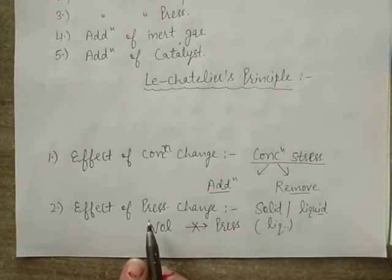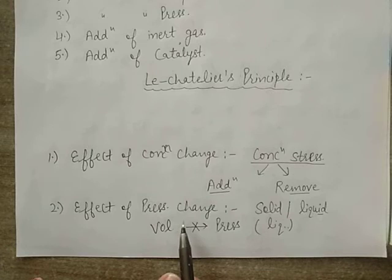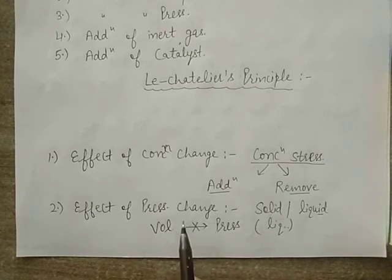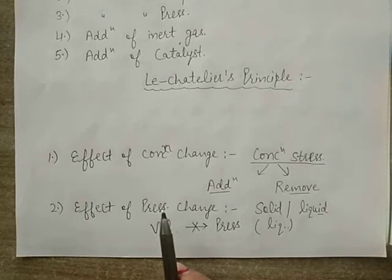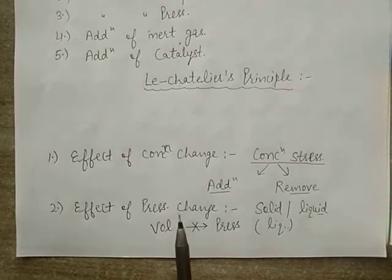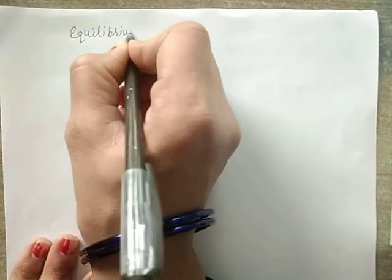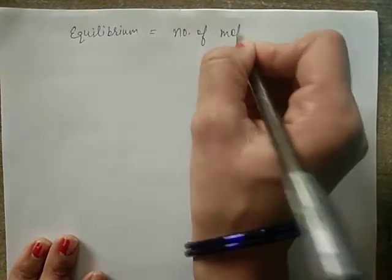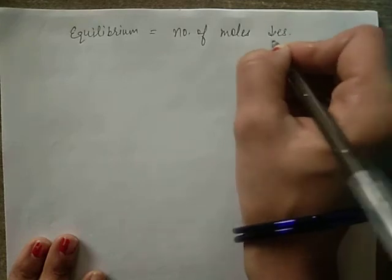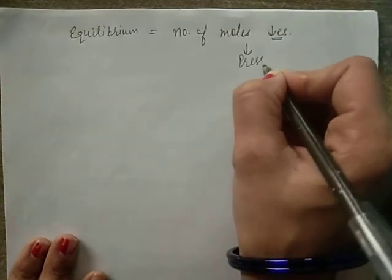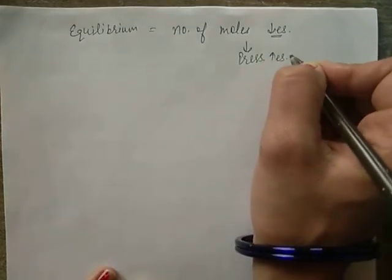Increase in pressure shifts the equilibrium in the direction where the number of moles of gases decreases, and vice versa. As pressure increases, the volume of the product decreases, meaning Qc decreases. To re-achieve equilibrium, the reaction moves in the forward direction.